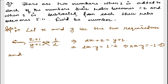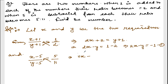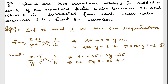The second condition is also given: when five is subtracted from each number, the ratio becomes 5 to 11. So (x - 5) divided by (y - 5) equals 5 by 11. Cross multiply: 11(x - 5) = 5(y - 5), giving 11x - 55 = 5y - 25. Rearranging: 11x - 5y = 30. This is equation number two.